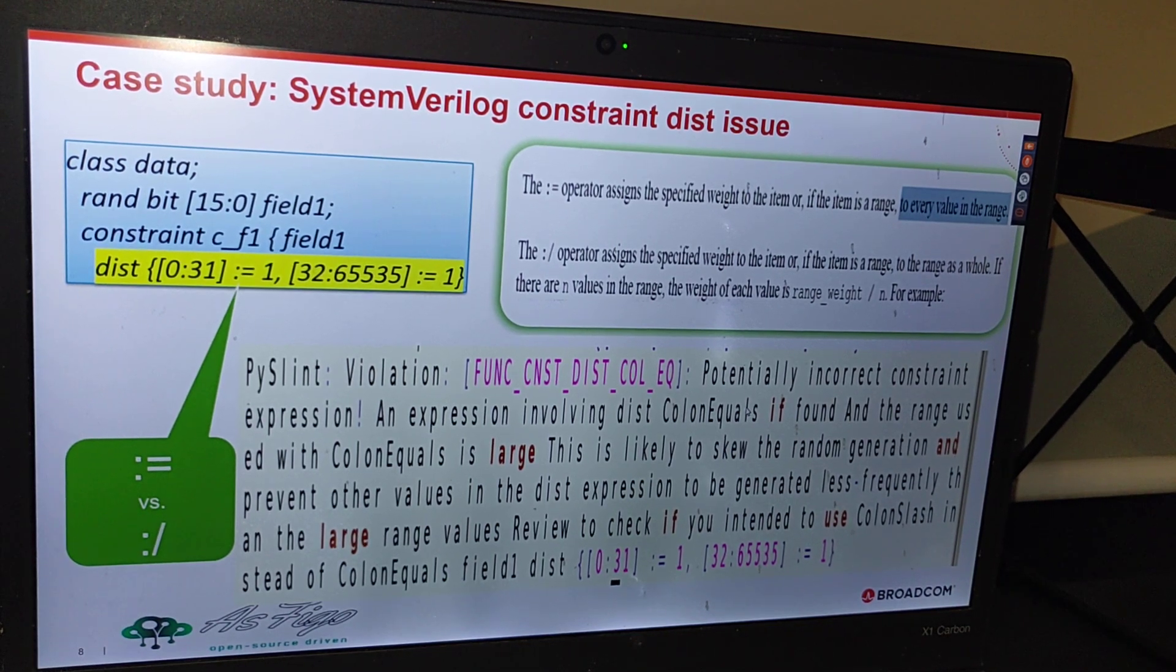It doesn't make any sense. So what we have to do is distribute among the range where it has to be. So instead of colon, equal colon slash makes a lot of sense.